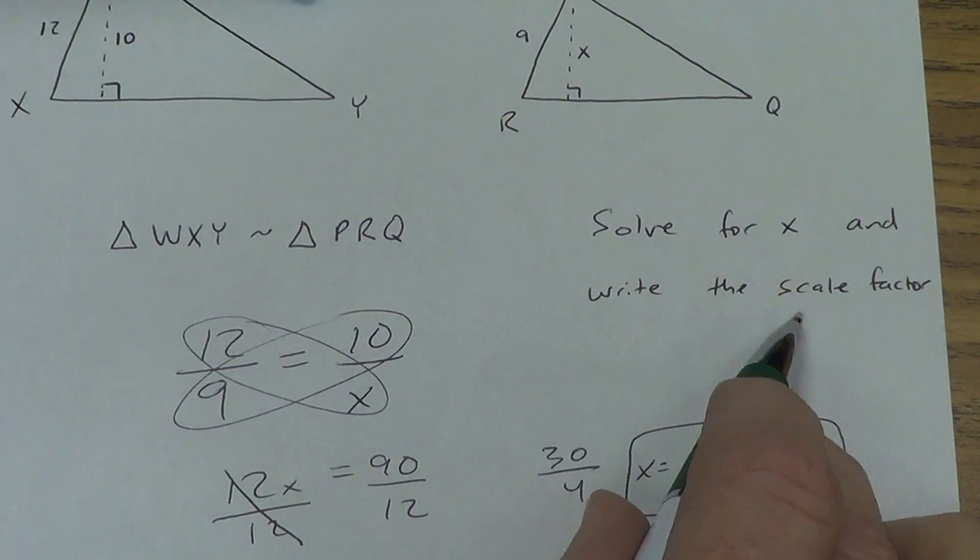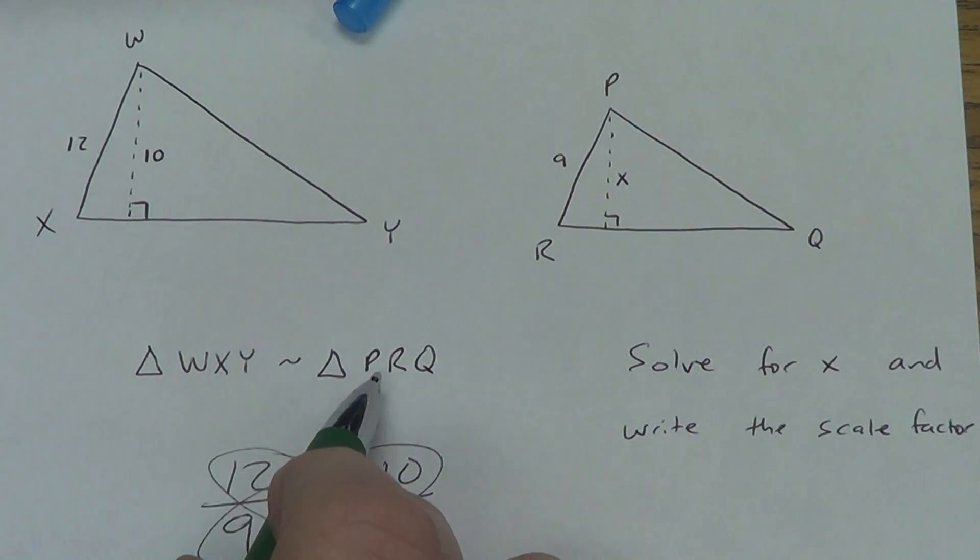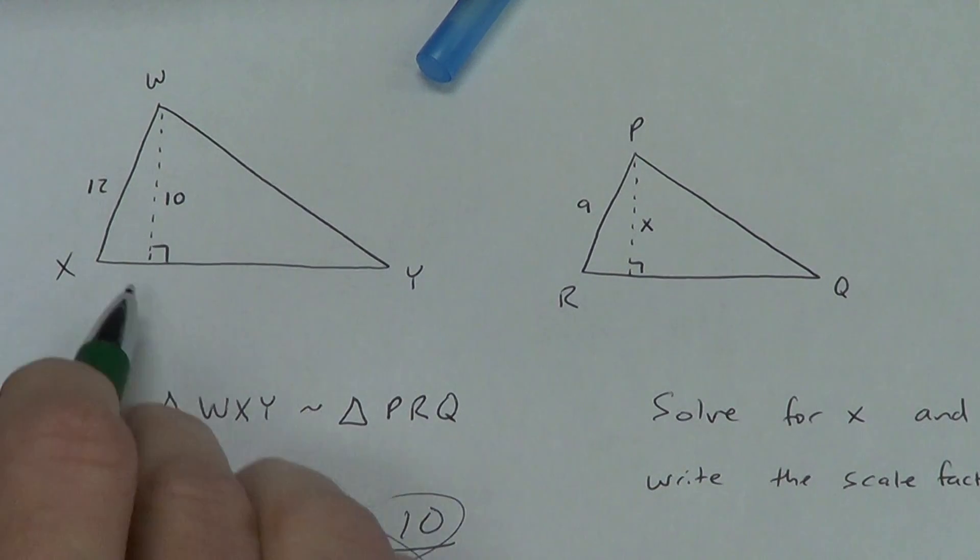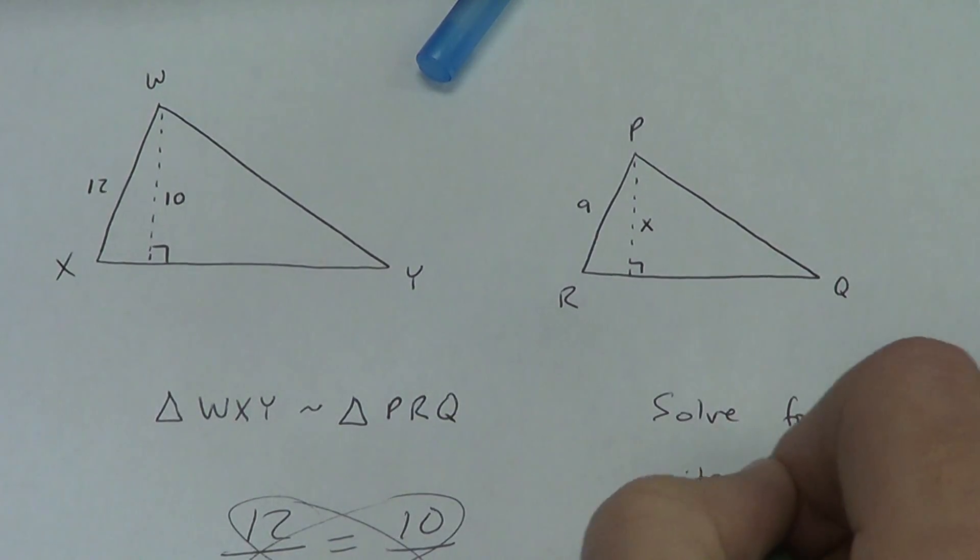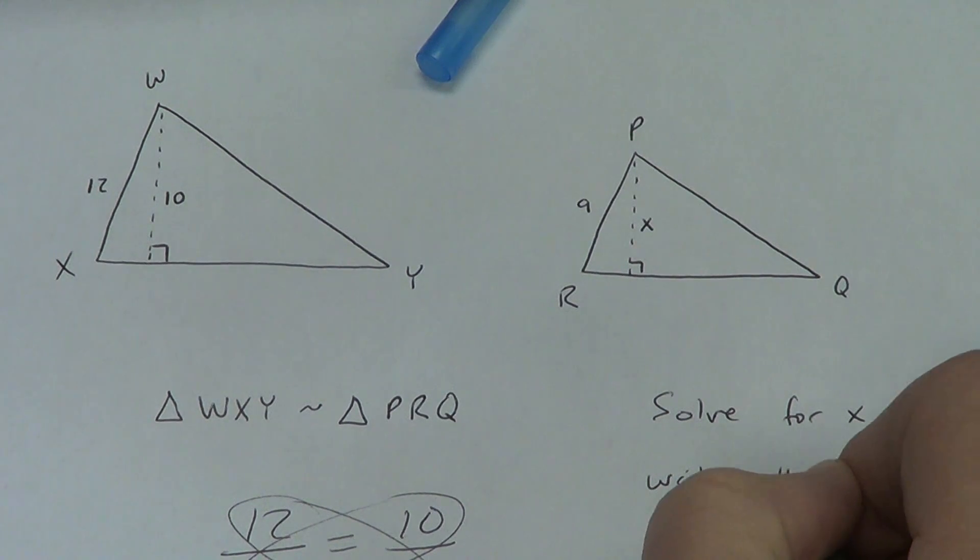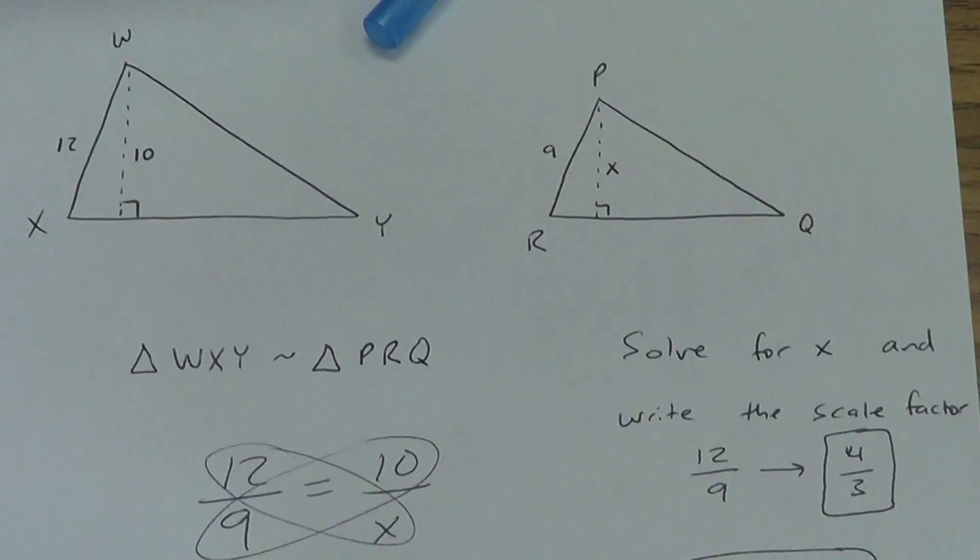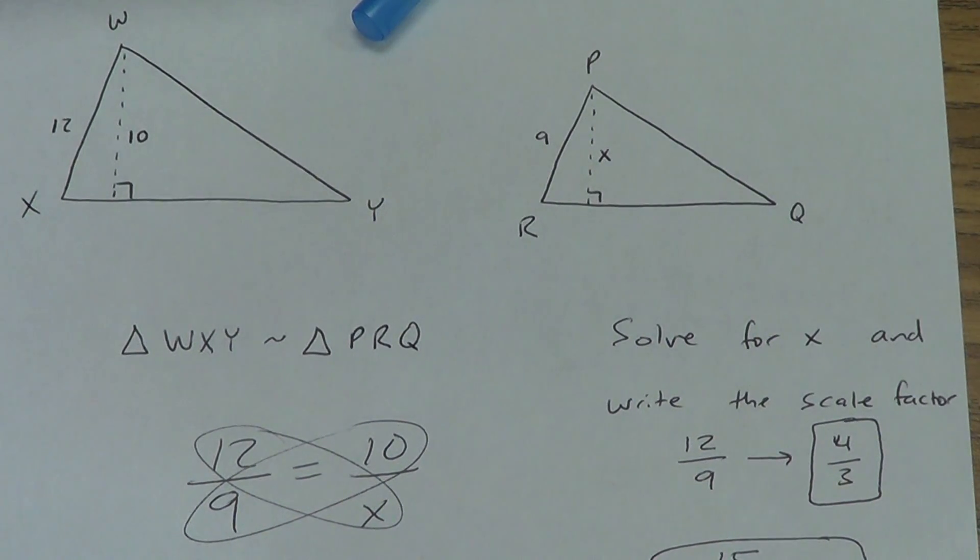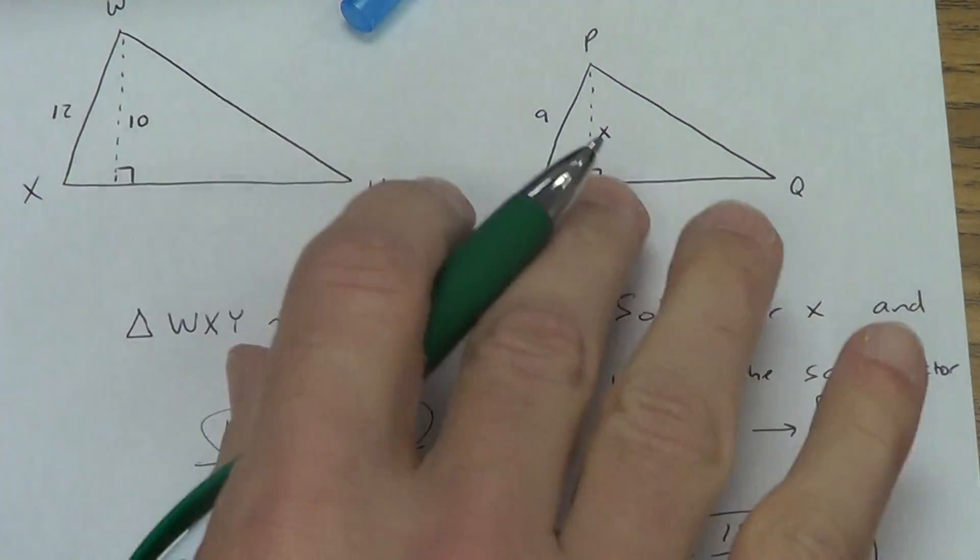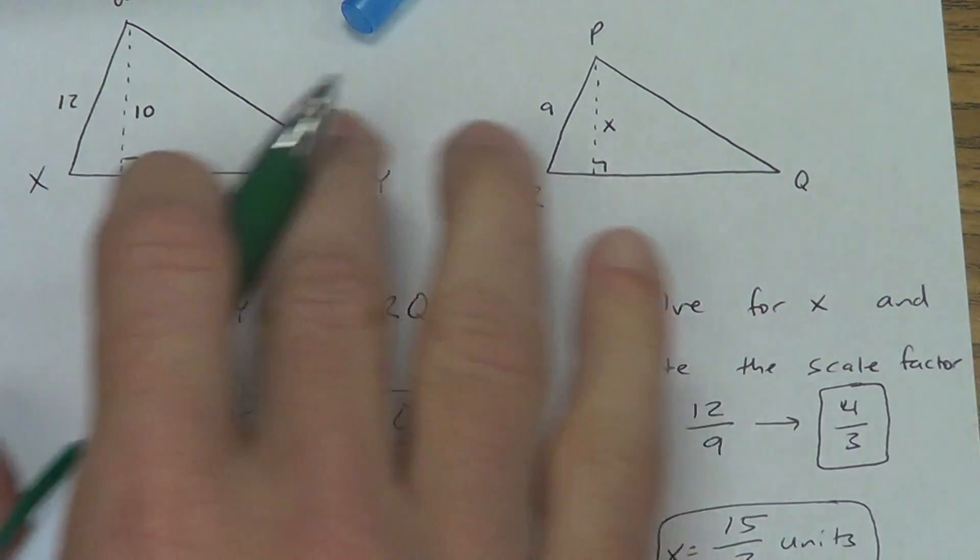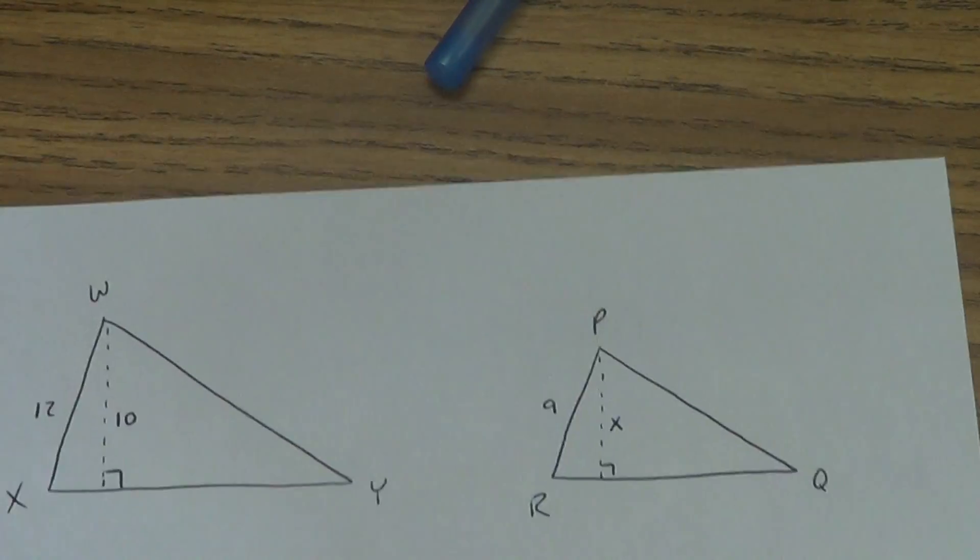What about the write the scale factor part? Now, once again, they didn't tell me which one was new and which one was old. So, I'm going to go first over second. So, WXY, 12 over the 9. So, 12 over 9. Can I reduce that? Yes. I can divide by 3. So, that's 4 over 3. And that's my scale factor. Now, remember, if this is bigger than 1, which it is, that tells me this is bigger than this one. The first over the second. Bigger, smaller. Bigger number on top. Smaller number on bottom. Makes sense.